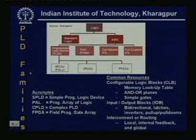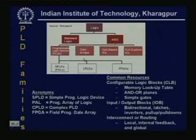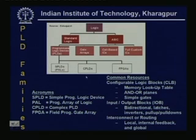Programmable logic devices — already we have read how PLDs like PAL and PLA can be designed and what is the actual circuitry. Using these programmable logic devices, VLSI circuits can be implemented. The logics are normally of two types: standard logic and ASIC — application specific integrated circuits. These include programmable logic types, gate arrays, cell-based ICs, and full custom ICs. CPLDs — complex programmable logic devices — and FPGAs — field programmable gate arrays — are also covered.